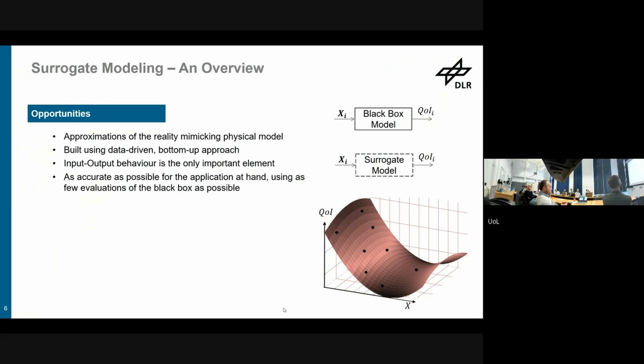Then the input-output behavior is the only important element closely related to what we have before. The question is always what is your black box model? Is the aeroelasticity simulation as a whole the black box model, or is the aerodynamics a black box model that's connected to the structural as a black box model? This clearly alters the models you have, and that's the question the engineer has to decide for his purpose. And the aim is always you want to be as accurate as possible for the application you have at hand using as few evaluations of the black box as possible.